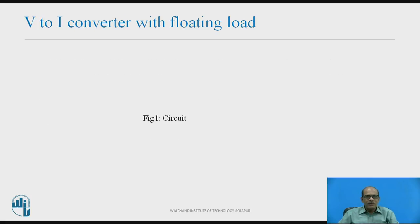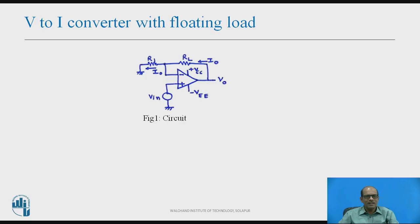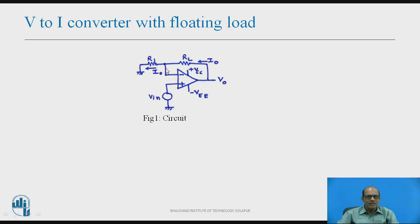First we will understand V2I converter with floating load. Looking at the circuit, it makes use of an operational amplifier. Input is applied at the non-inverting terminal. At the inverting terminal, there are two resistances RL and R1 as shown in the figure. The load is floating, meaning it is connected between the output and the inverting terminal, and is not connected to ground — that is why it is called a floating load.